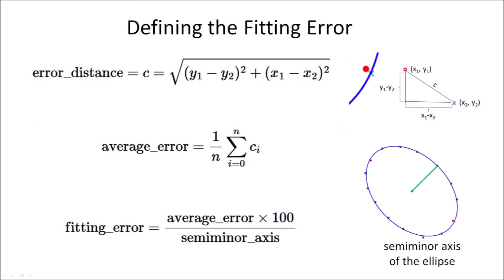Standard measures of fitness like the mean squared error did not provide meaningful comparisons for ellipses of different sizes. I had to define an error measure that was independent of the number of sample points and the size of the ellipse.